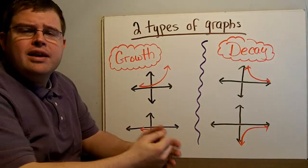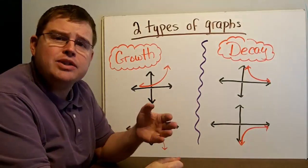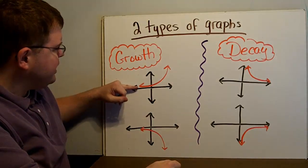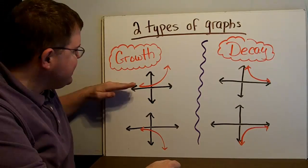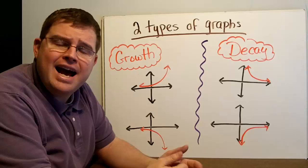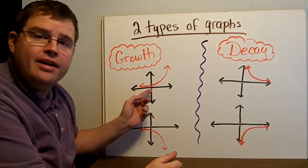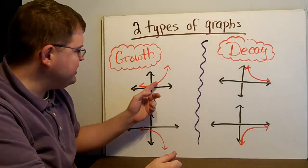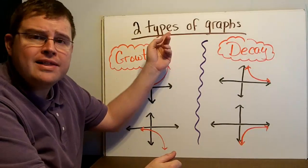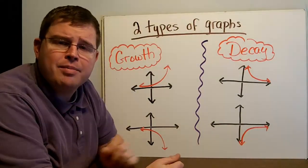When we're dealing with exponential functions, there are a couple of different graphs you could have. The first type is called growth. When we have growth, notice it starts really low to the axis and then shoots up really quickly. Picture something like 10 to the x: 10 to the 0 is 1, 10 to the 1 is 10, 10 to the 2nd is 100, 10 to the 3rd is 1,000, 10 to the 4th is 10,000 — and it's off the top of the graph already.